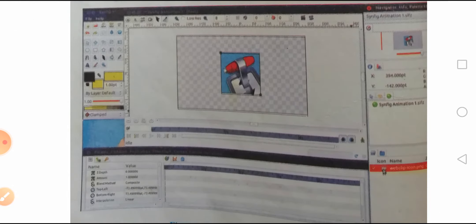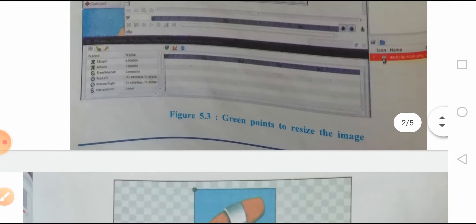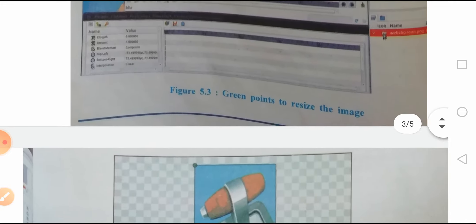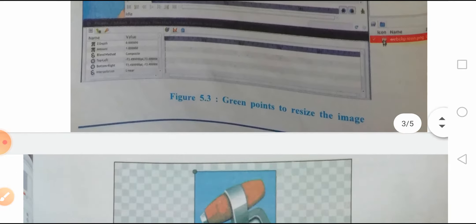If you don't select the layer, the points will not appear. After selecting, it will be appearing there. Figure 5.3 shows the green points to resize the image.